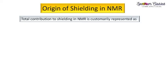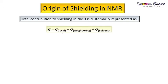Hello everyone, welcome back to Spectrum Glasses. We are resuming our NMR series, and in this video I am going to discuss the origin of shielding in NMR — nuclear magnetic resonance. The term shielding is represented by the symbol sigma, and it is a very important factor in determining the chemical shift value for a given nucleus.